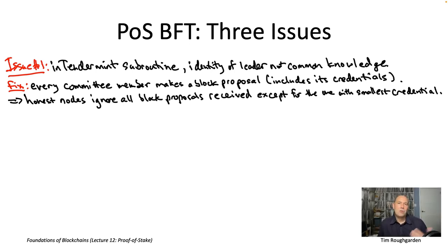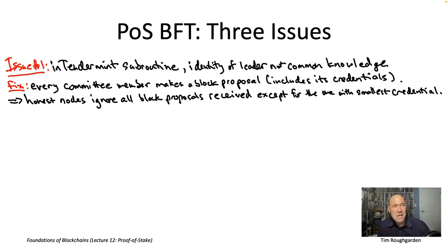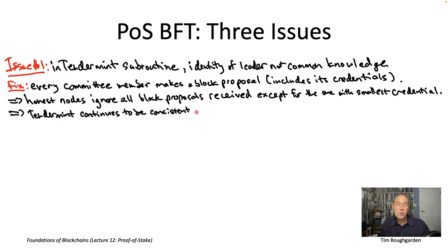While there's strong intuition behind this idea, it shouldn't be obvious that it actually repairs Tendermint enough. For example, with network delays, a participant might not know who the real leader is — perhaps all messages from the node with the smallest VRF output never arrived on time, so you mistakenly think the second-smallest is the leader. That's a legitimate concern, but it turns out Tendermint with this modification does retain its consistency and liveness properties. If you want to verify this, go back to lecture seven and convince yourself the analysis still applies.